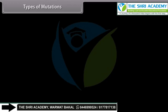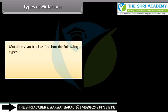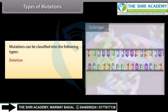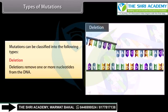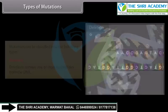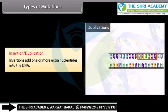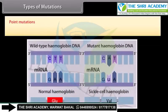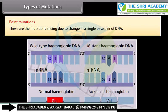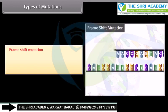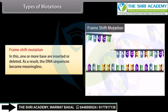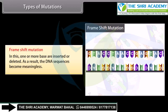Types of mutations: Deletion — removes one or more nucleotides from the DNA. Insertion or duplication — adds one or more extra nucleotides into the DNA. Point mutations — arise due to change in a single base pair of DNA. Frame shift mutation — one or more bases are inserted or deleted, causing the DNA sequence to become meaningless.